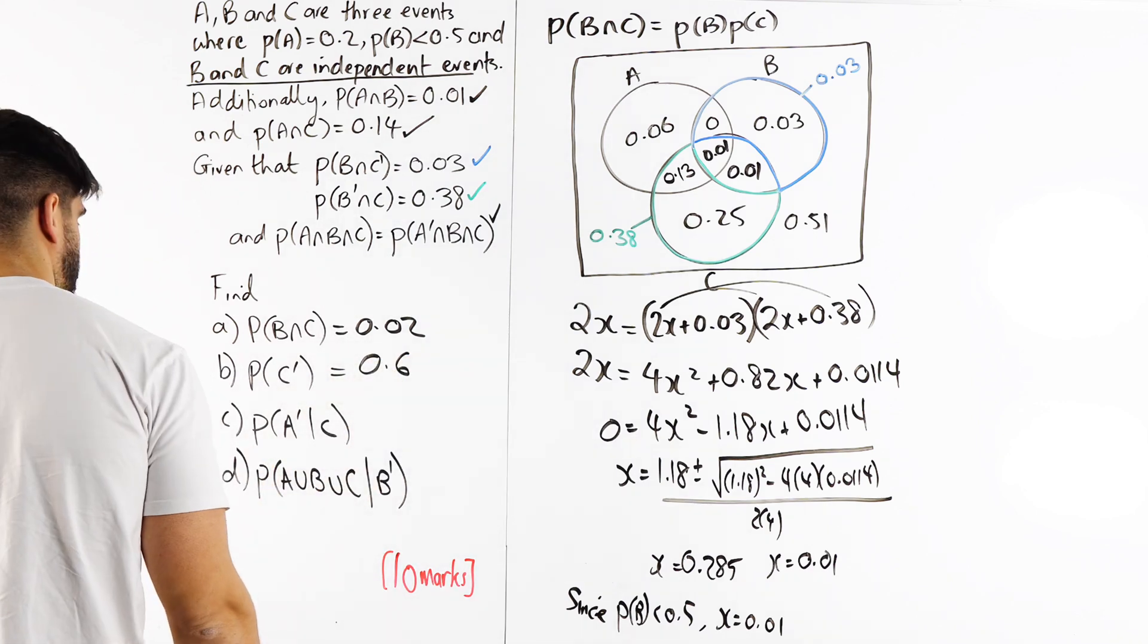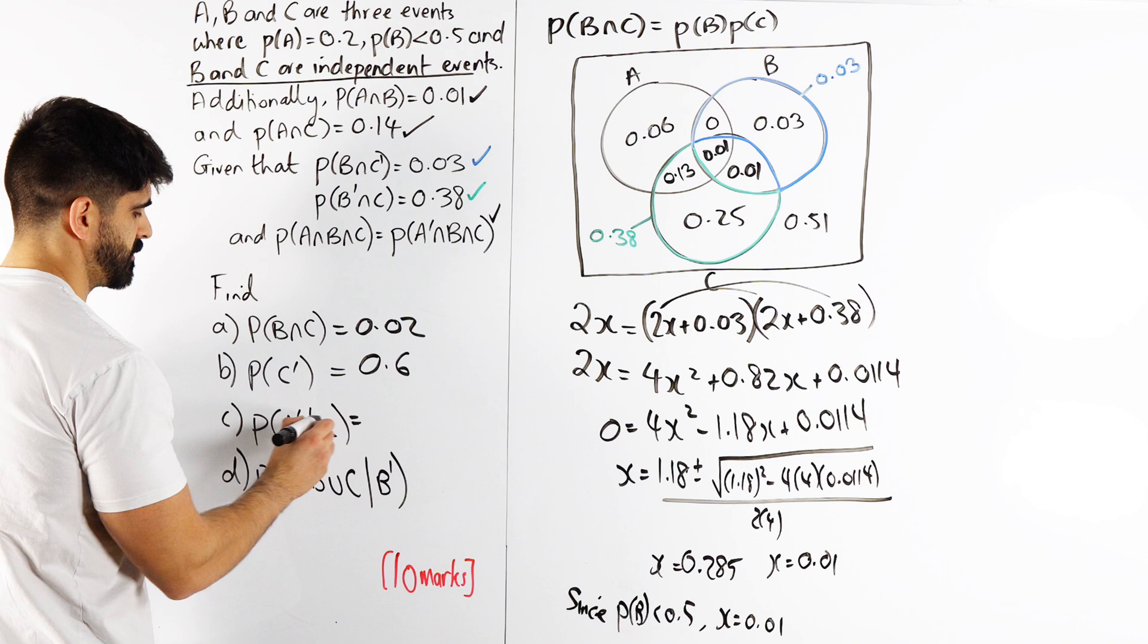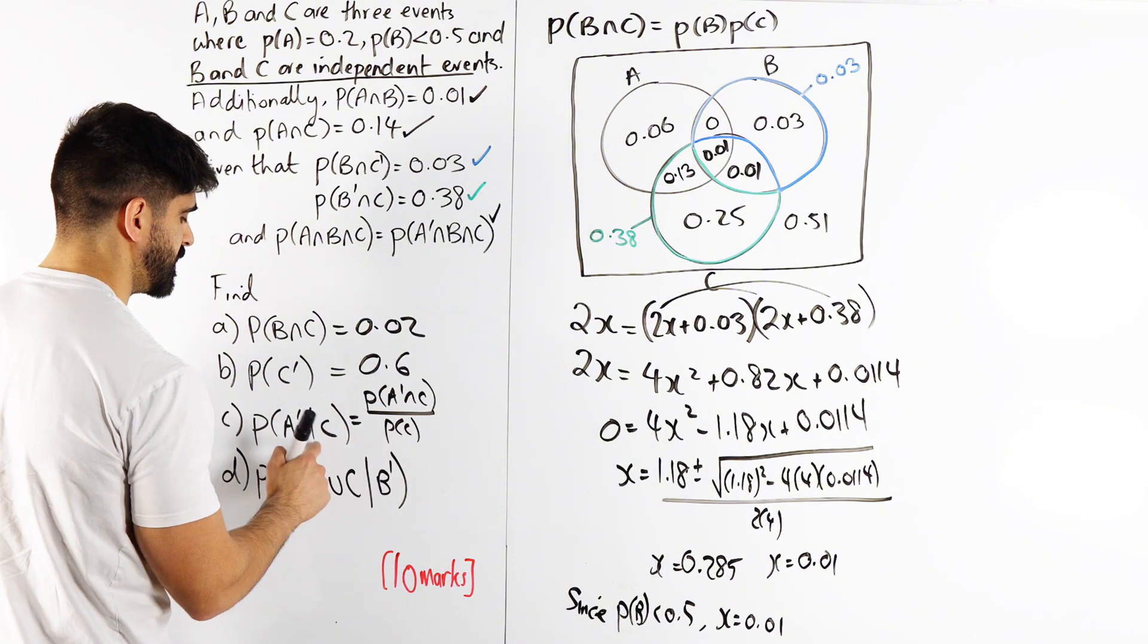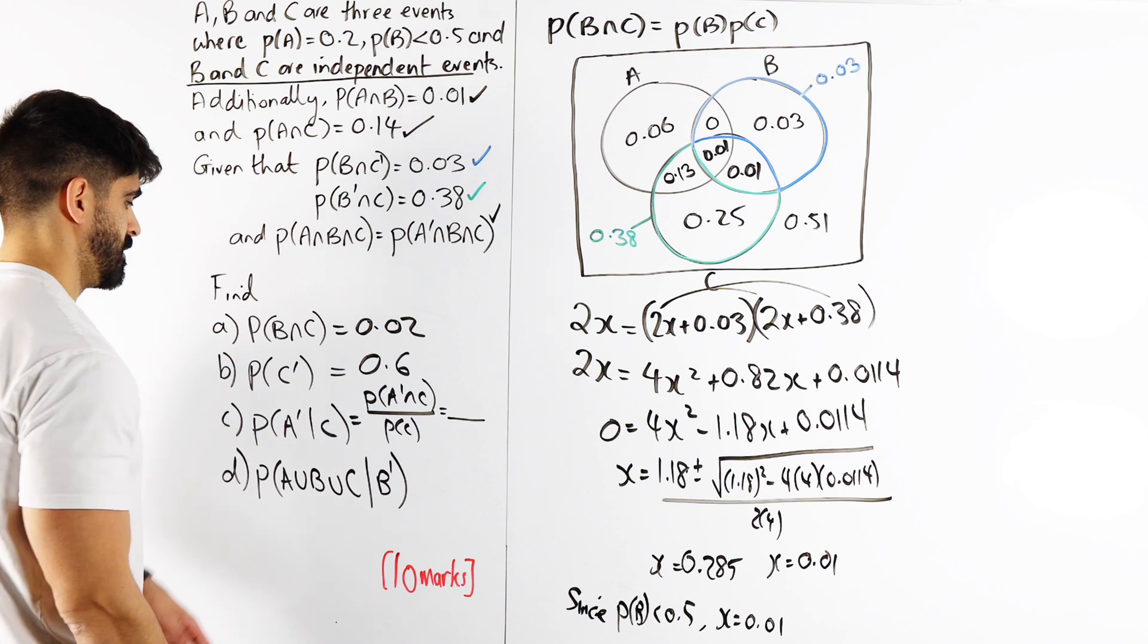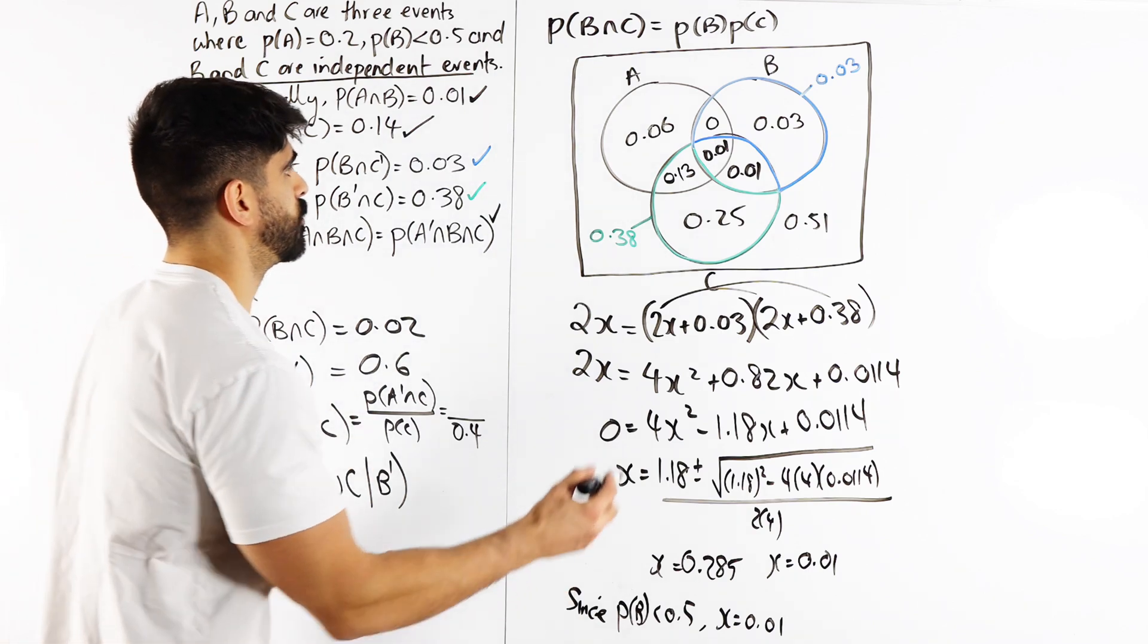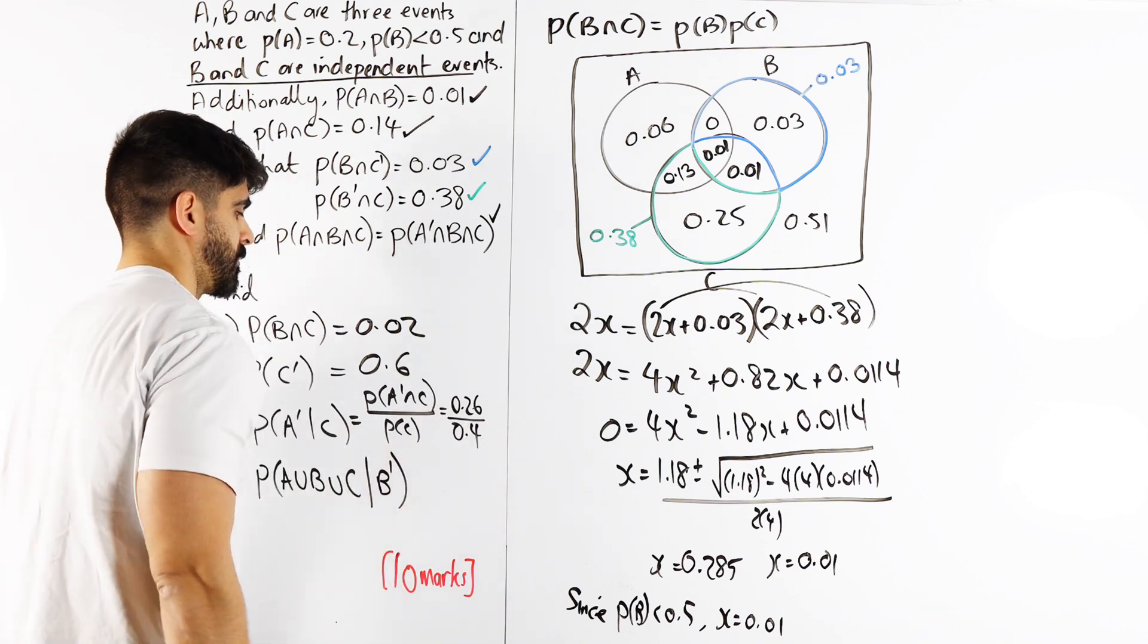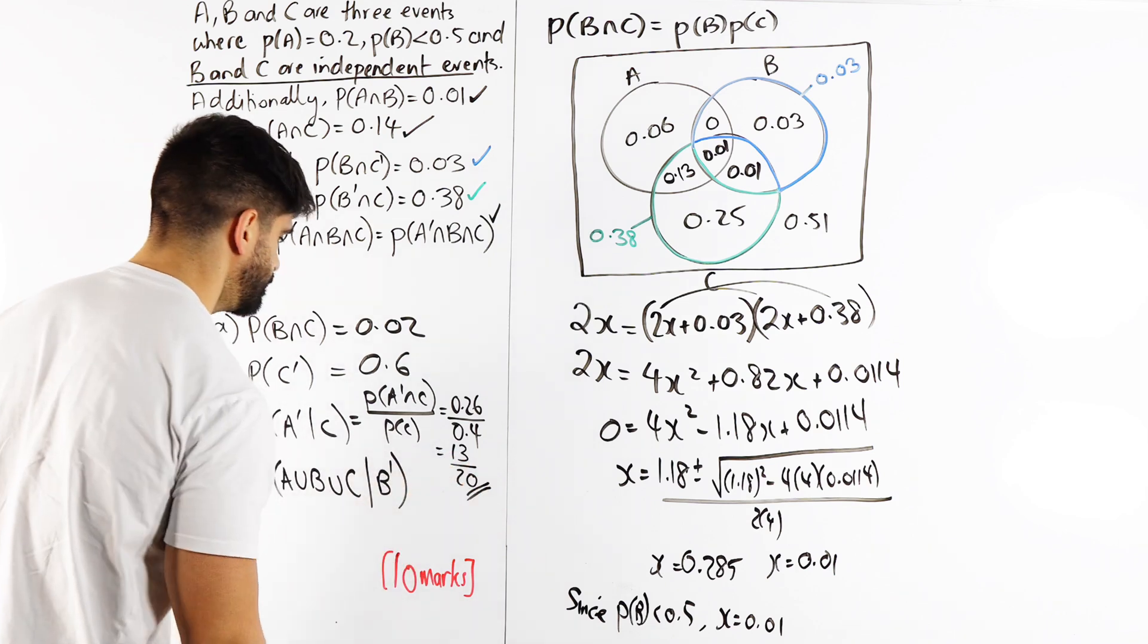Probability of not A given C. Using our conditional probability statement, this becomes P(A'∩C) over P(C). Remember we're saying given C, so it's out of C. What's the probability of not A happening? I already know what P(C) is. If not C is 0.6, then C is 0.4. Not A and C, we're saying we want C and nothing to do with A, which is 0.26. Which is 13 over 20. So E equals 13 over 20.